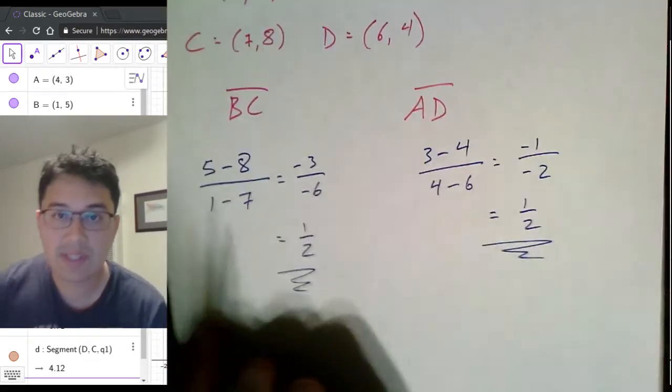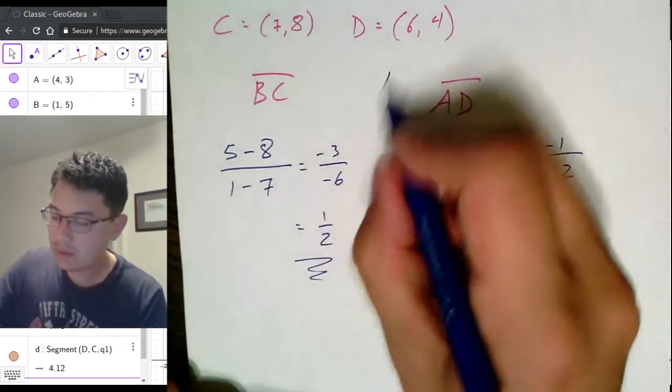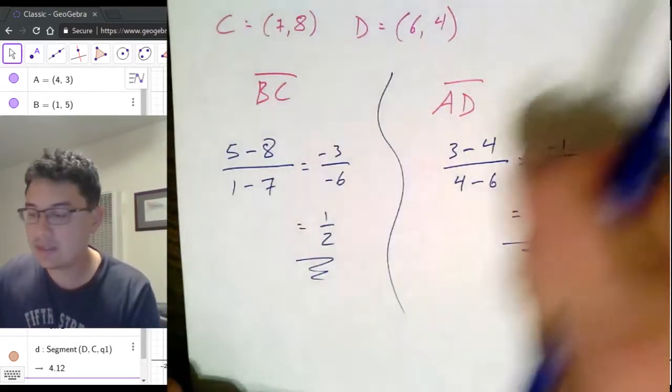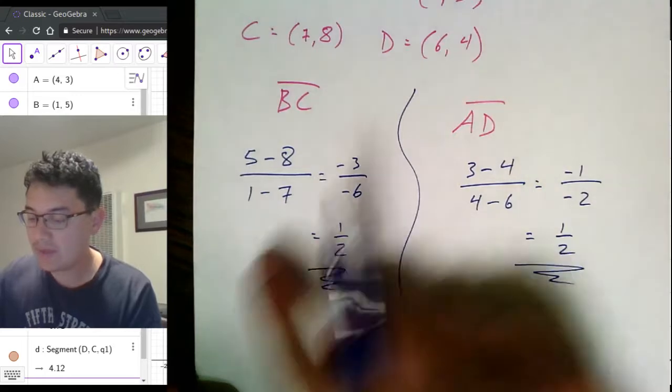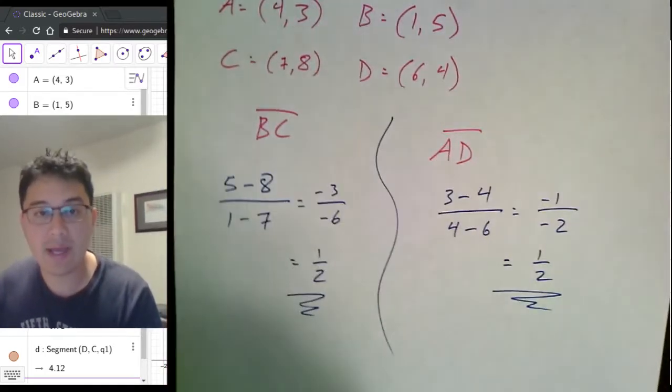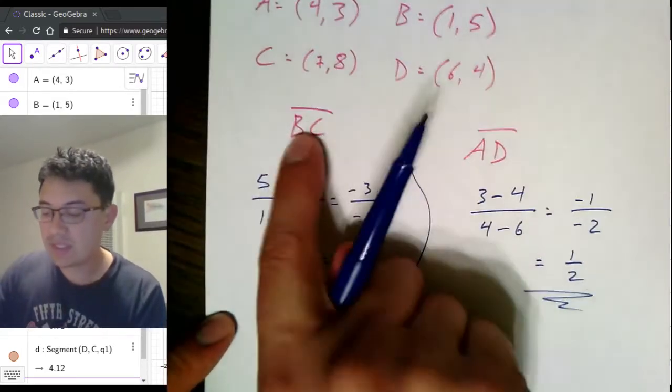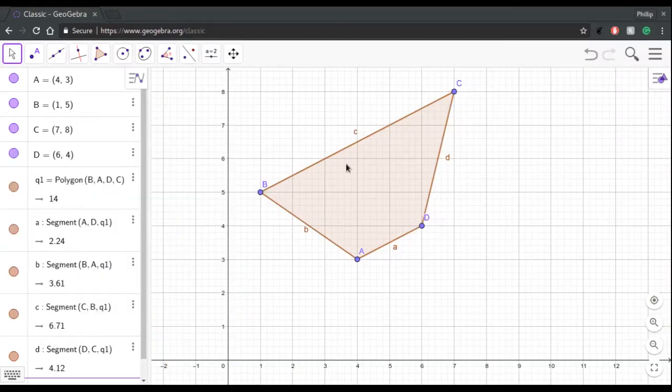So, we calculated our two slopes here. We've got segment BC and segment AD. We found the slopes. The slopes both worked out to one half. So, those two segments, BC and AD here, this segment and this segment here, these two lines are parallel. So, these two sides are parallel, and B and D are not parallel. So, this is a trapezoid. We have confirmed that this structure is a trapezoid.